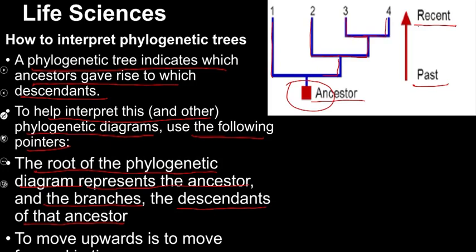When we look at the common ancestor — this organism was the common ancestor of all of them. However, if we look at a branch point higher up, it is no longer the common ancestor of species one, because it has branched off. So that becomes a common ancestor of species two, three, and four. If we go to another branch point, it is no longer the common ancestor of one and two, but it is the common ancestor of three and four.